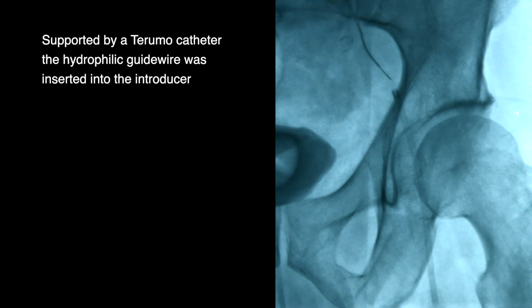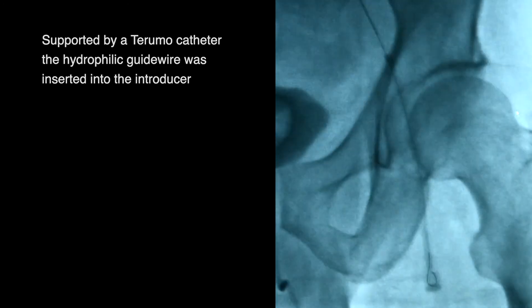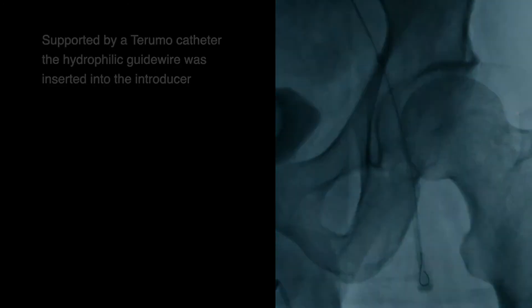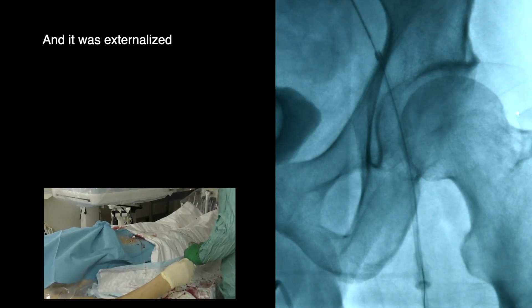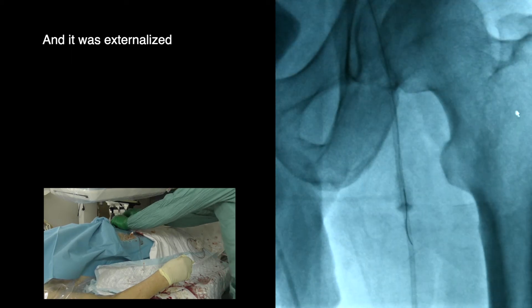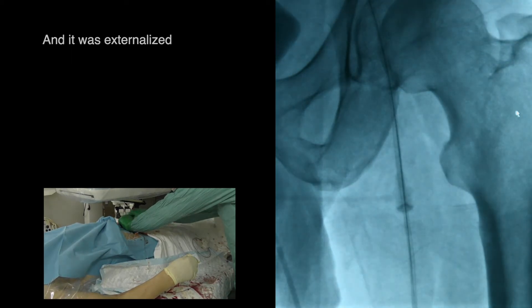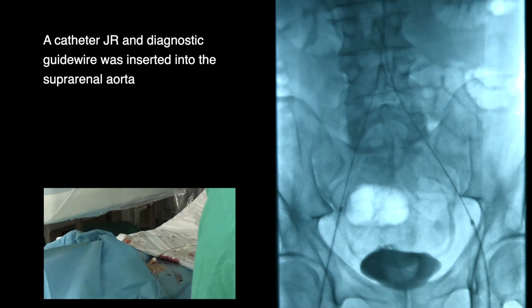Supported by a Terumo catheter, the hydrophilic guide wire was inserted into the introducer and externalized. A JR catheter and diagnostic guide wire were then inserted into the suprarenal aorta.